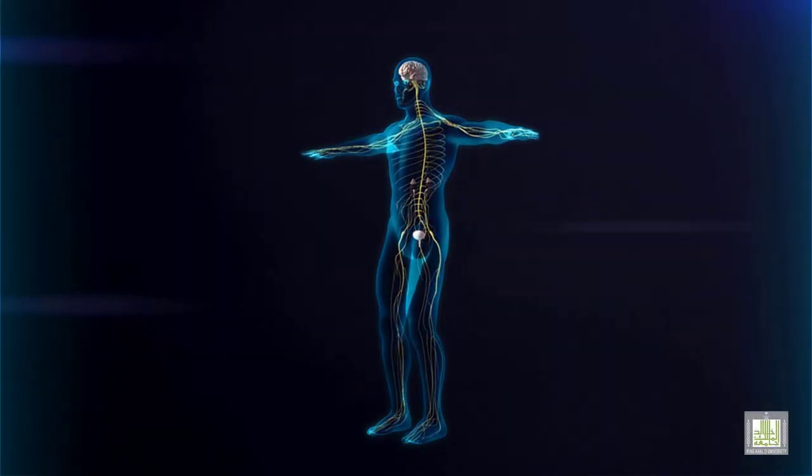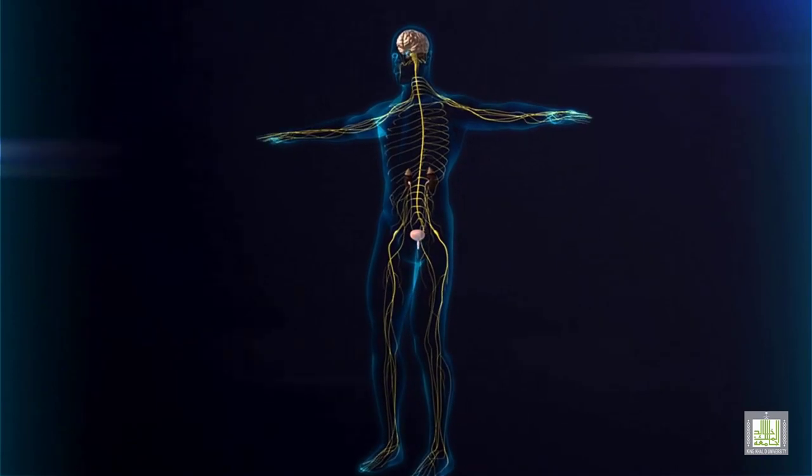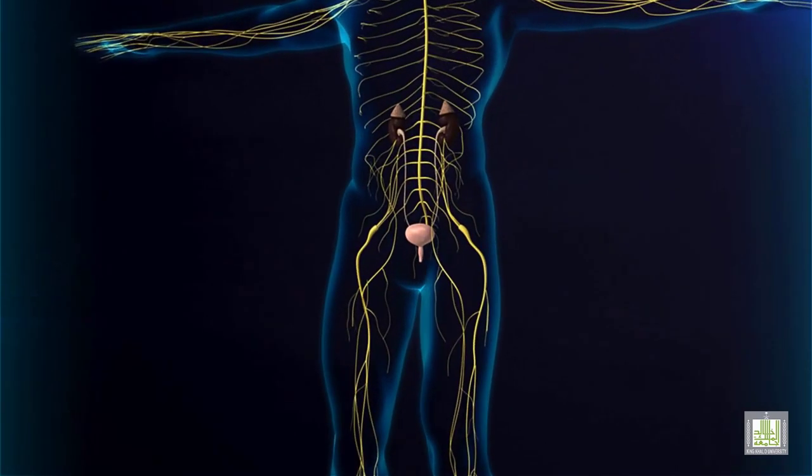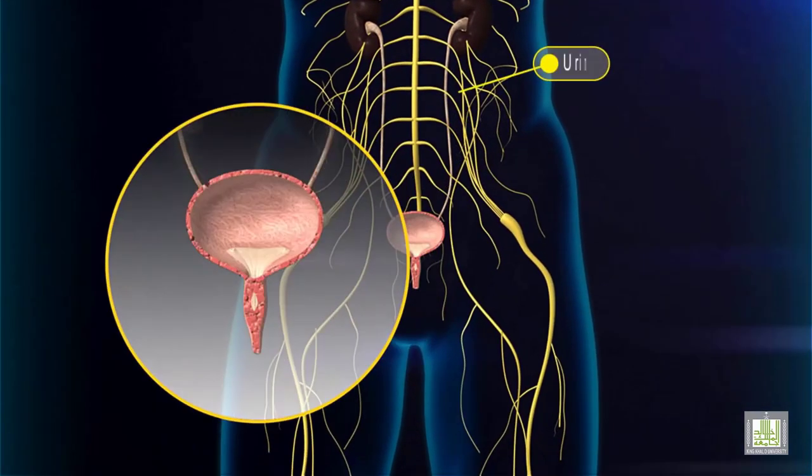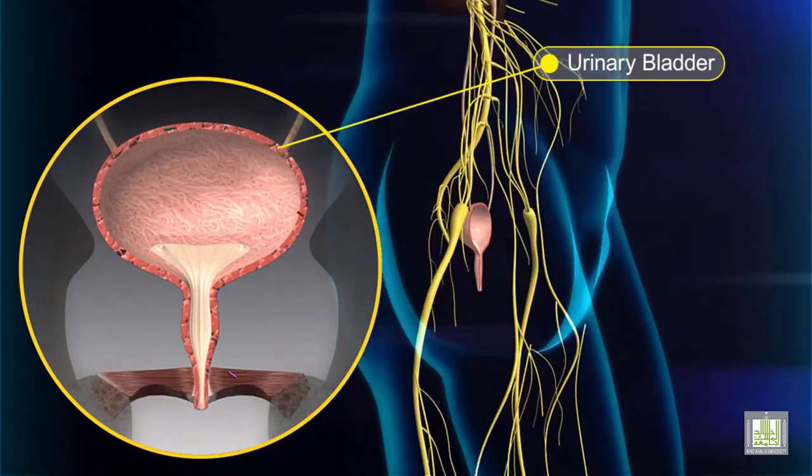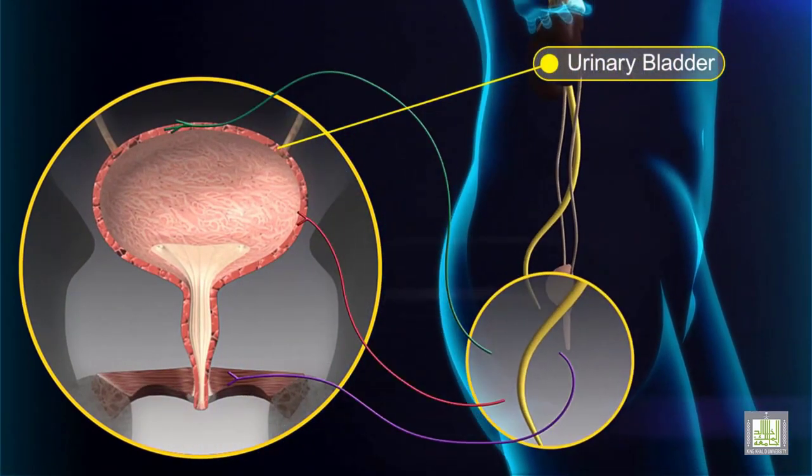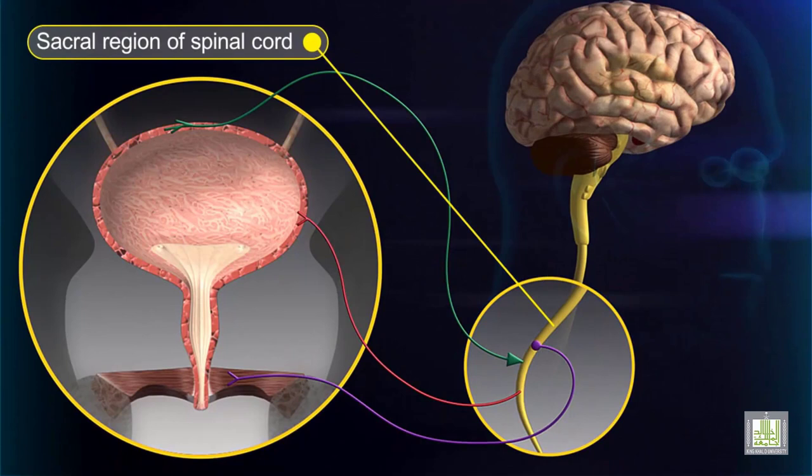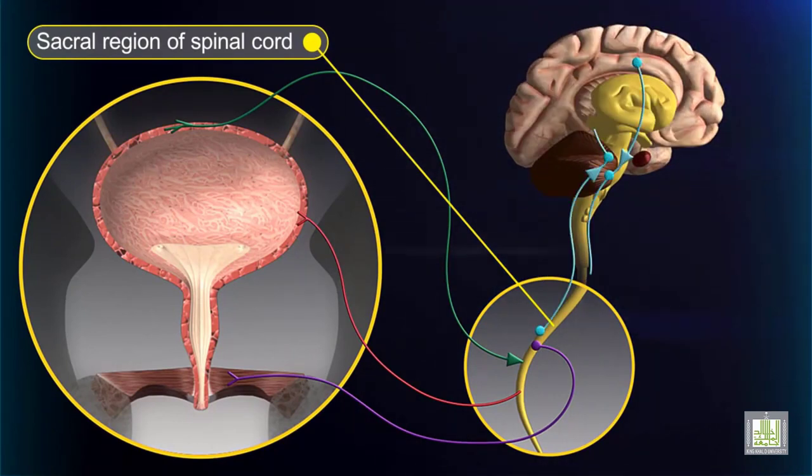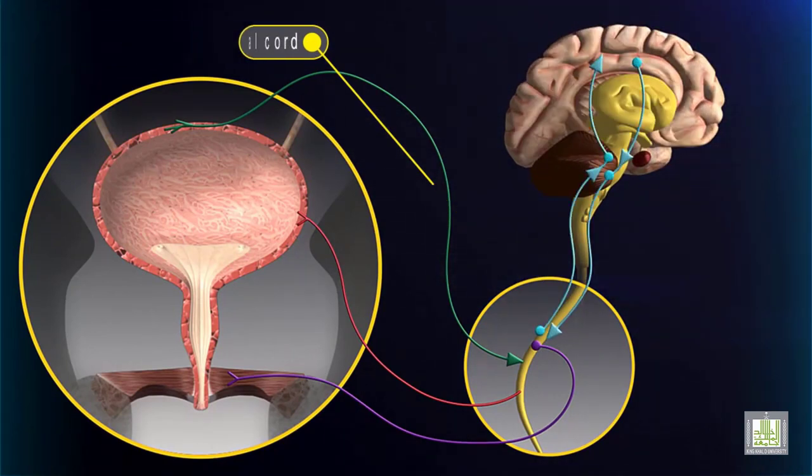The micturition reflex involves impulses traveling from the urinary bladder to the sacral region of the spinal cord and from the sacral region of the spinal cord back to the bladder. It is coordinated by neurons in the spinal cord and can be influenced by signals from the brain.